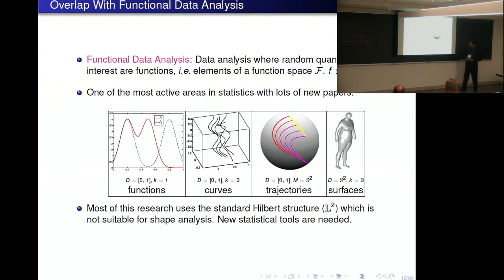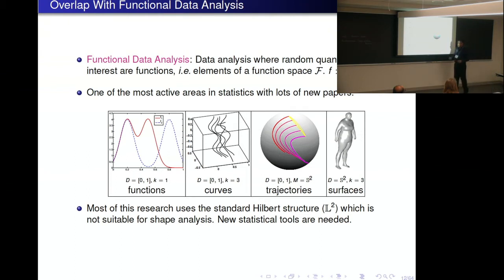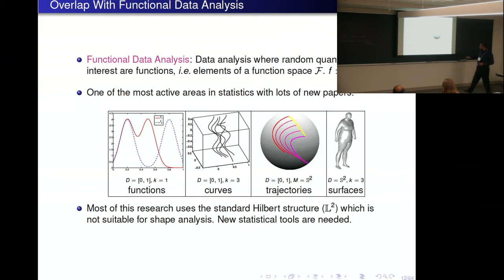The only caveat in using these statistical tools is that most of the work in statistics is developed using the most natural metric structure of functions — the standard L2 norm, which measures the integral of squared differences between functions. It turns out this is not suitable for shape analysis. One has to look at newer metrics specifically designed for our goals in shape analysis. One can borrow these ideas from statistics with that important caveat.